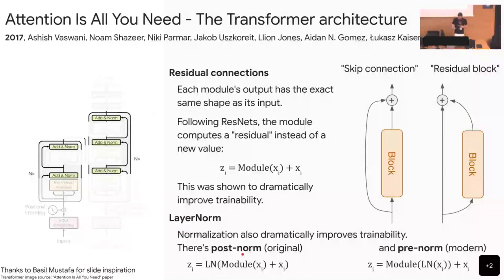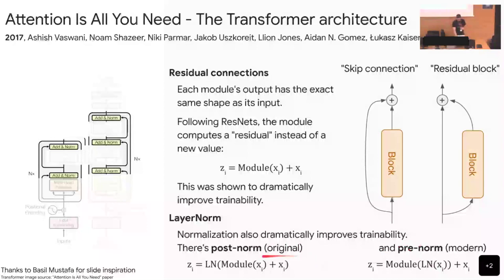Then there is layer normalization — essentially normalizing the activations, centering them and unit-variancing them. This makes things harder to interpret when you dig into what's going on, but makes models much more stable to train. In transformer world there exist two variants: post-norm and pre-norm. Post-norm puts the normalization after the residual connection plus; pre-norm puts it before the residual block is taken in. It's not yet clear which one is better.